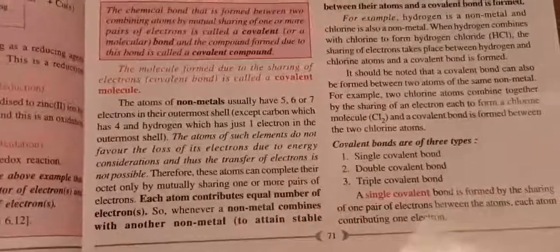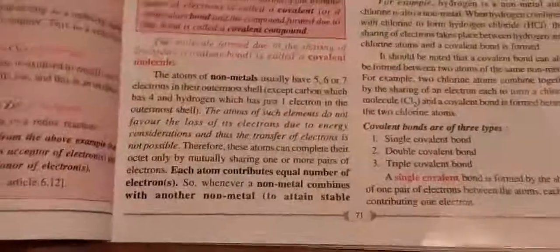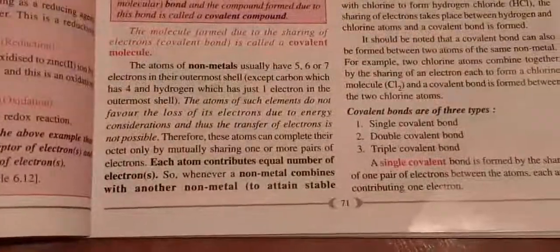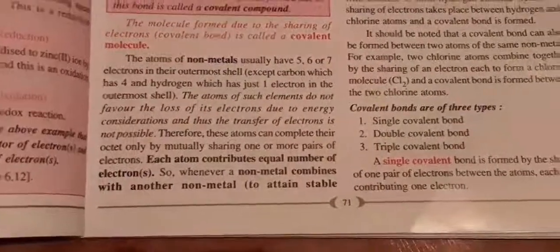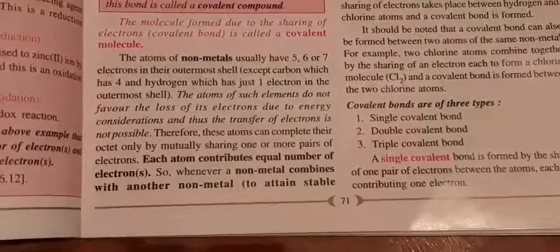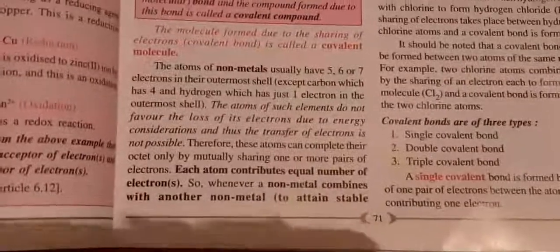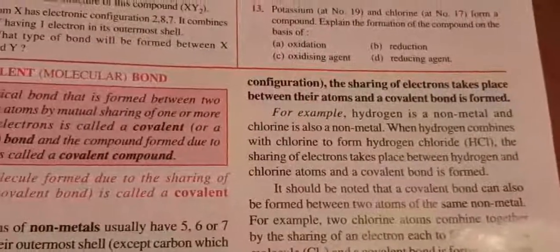They need to complete their octet. So for completing their octet, they share one or more pairs of electrons among each other. Each atom is contributing one electron, two electrons, or more as required to complete their octet. Again, in sharing — or in covalent bond — the basic concept is sharing of electrons only, and that is to acquire the noble gas configuration.